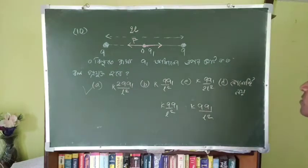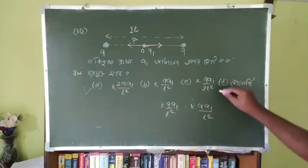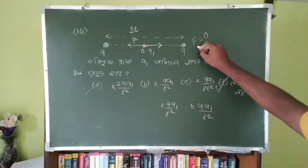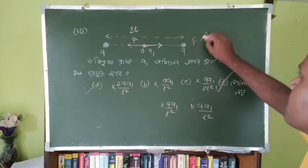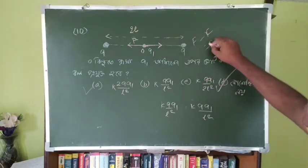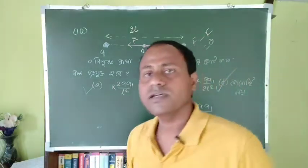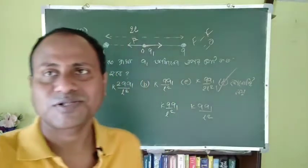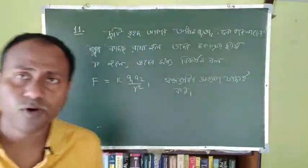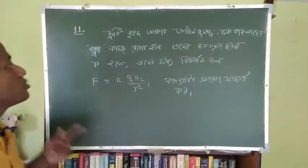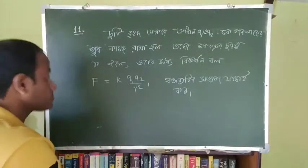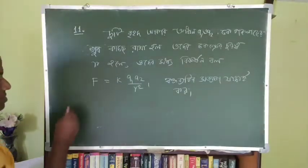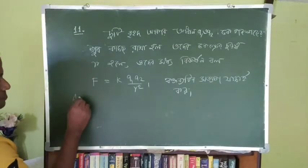If the net force on a charge is zero, then total force equals F minus F = 0. The answer will be zero. Students, let's go to the next question. If the charge is placed symmetrically, the answer remains zero since equal and opposite forces cancel out.